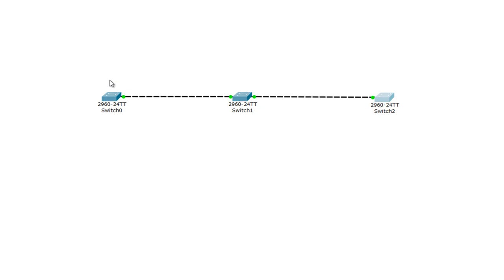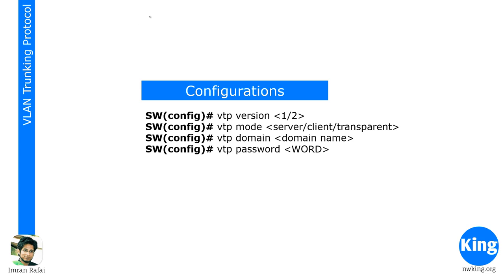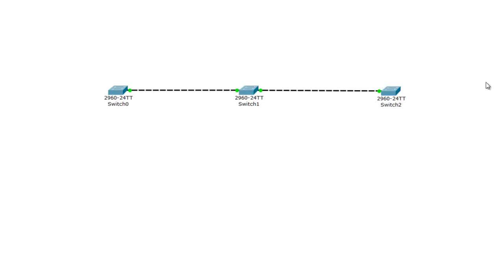Watch day 14 for a full explanation. Here are the configurations: to change the VTP version, use 'vtp version' in global configuration. To change the mode, use 'vtp mode' and choose server, client, or transparent. To create a VTP domain, use 'vtp domain' followed by the domain name. For a password, use 'vtp password' followed by the password.